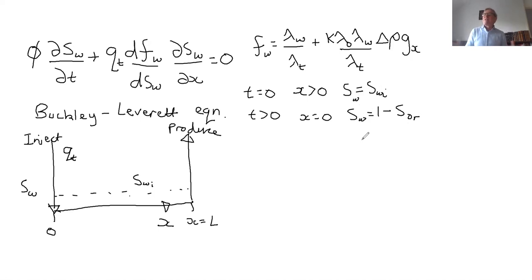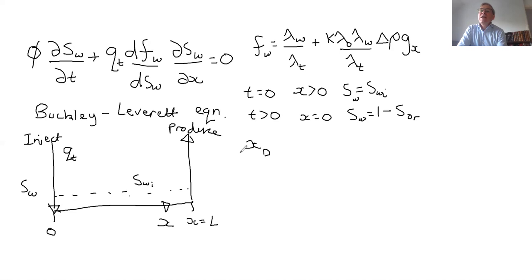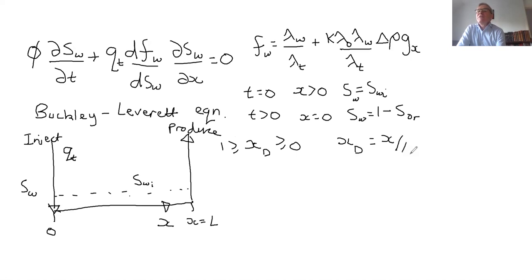The dimensionless units are as follows. We have a dimensionless distance xD that goes between zero and one, where xD equals x over L. That's sort of pretty obvious — that's your dimensionless distance.